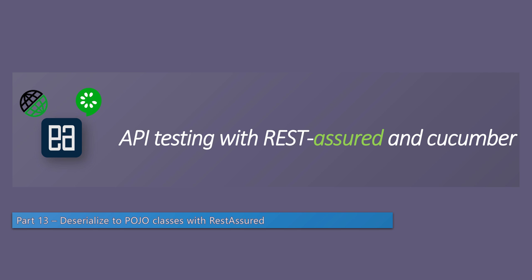Hi guys, my name is Karthik and I am from easyautomation.com. Welcome to part 13 of our API testing with REST Assured and Cucumber course. In this video we are going to be talking about deserializing to POJO classes with REST Assured.